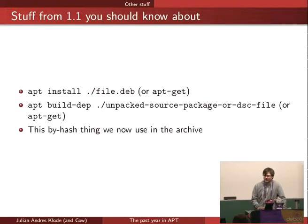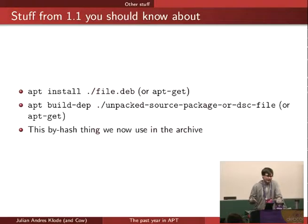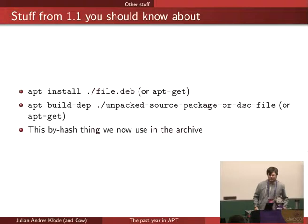There's also the by-hash thing — you might have noticed the archive used that or there was an announcement about it. It works by storing files using the hash value: you create the hex digest and store files in the by-hash subdirectory, with subdirectories named by the hash algorithm name and files named by the hex digest. The main packages files just link to them. This prevents hash sum mismatches, which were quite common previously, because now you can update a mirror basically transactionally — update everything except the release file first, then update the release file, and it just works.